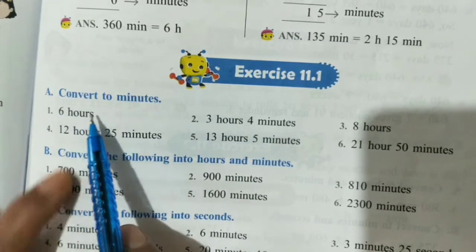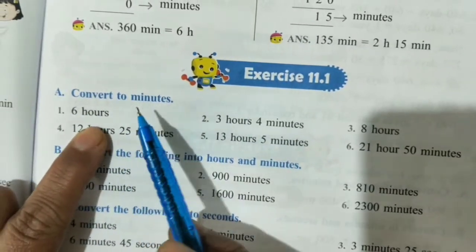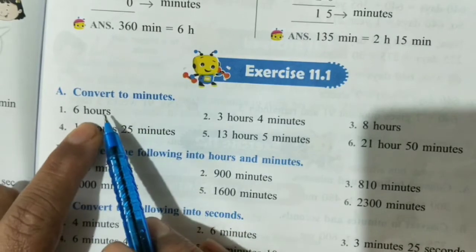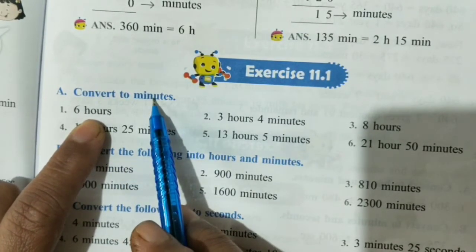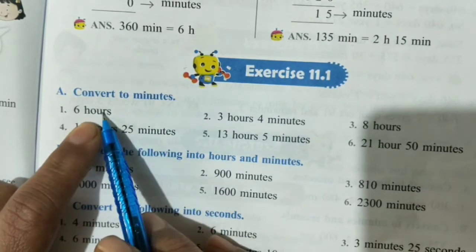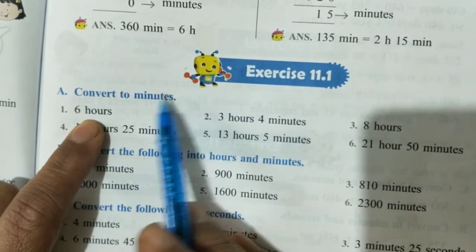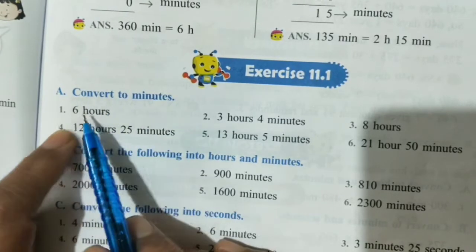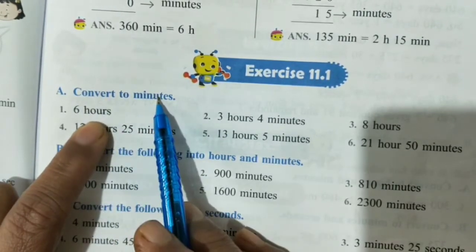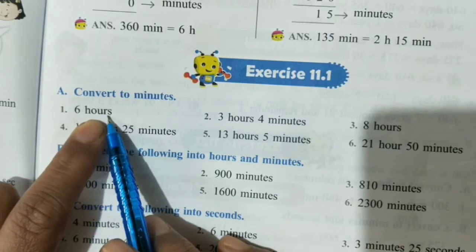First is 6 hours. When you do a question, you have to read carefully. We have given the question in hours and you have to convert into minutes. You should know 1 hour is equal to how many minutes? 60 minutes. So 6 hours is equal to 60 times 6, equals 360 minutes.